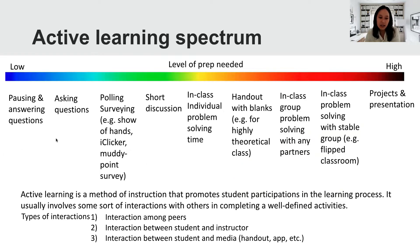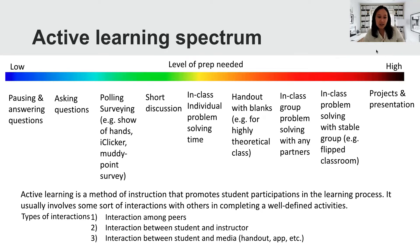Active learning is a method of instruction that promotes student participation in their learning process. Naturally, it involves some sort of interactions with others in completing some well-defined tasks or deliverables. This interaction includes interaction among peers, between student and instructor, or between a student and some other media — it could be a handout or an app on their phone.